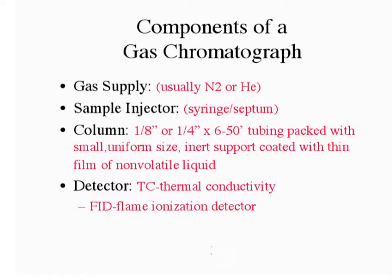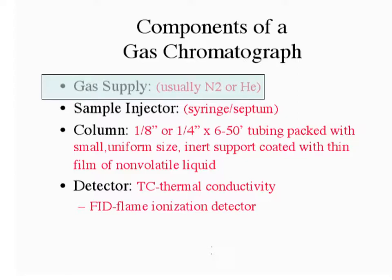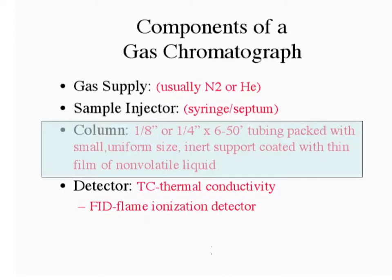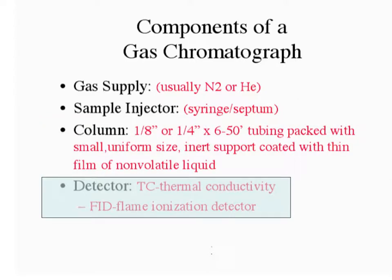All gas chromatographs contain the same four basic parts. First, you need a gas to push the sample through the column. Inert gases are used because they will not react with the sample. Second, you need a place and a way to introduce your sample into the instrument. Third, you need a column where partitioning can take place between the gas and liquid phases. Last, you need a way to detect your components once they have been separated and leave the column.